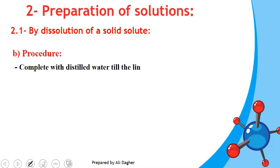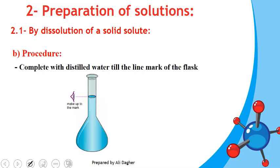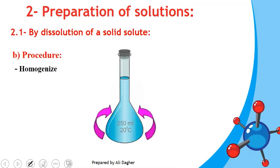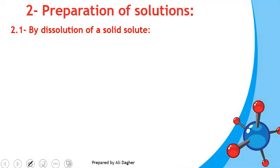Then we complete with distilled water up to the line mark of the flask. Our eyes should be at the same level as the line mark to read the volume correctly — the meniscus should be tangent to the line mark. Finally, we stopper the flask and shake to make the solution homogeneous. This completes the procedure for preparing a solution from a solid solute.